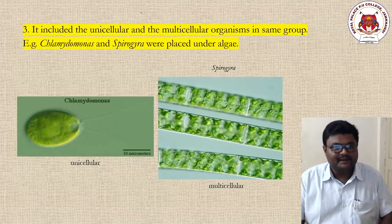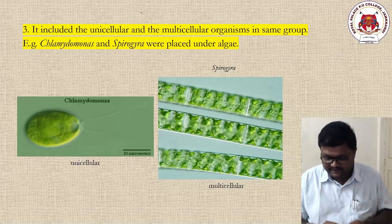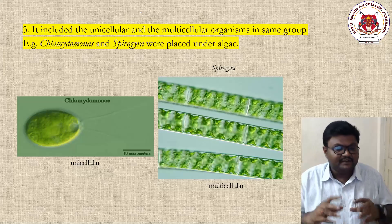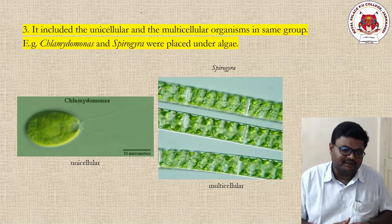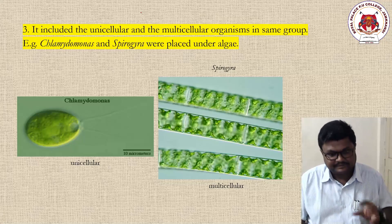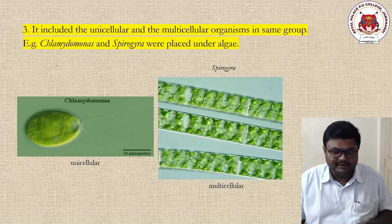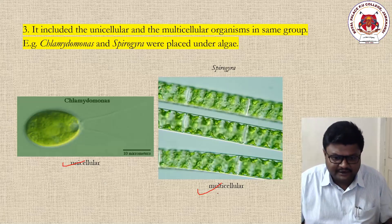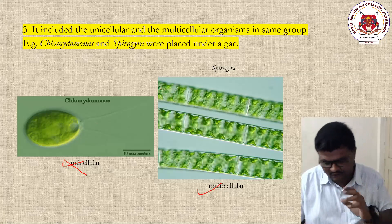The third drawback: Kingdom Plantae should include only multicellular organisms, but it even included some unicellular organisms. For example, Chlamydomonas and Spirogyra were both placed in algae under Kingdom Plantae. Chlamydomonas is unicellular in nature while Spirogyra is multicellular. Adding Chlamydomonas — a unicellular organism — to Kingdom Plantae was wrong.